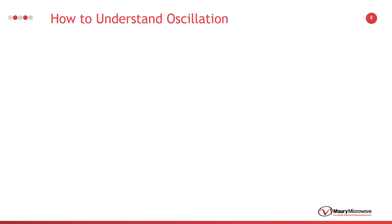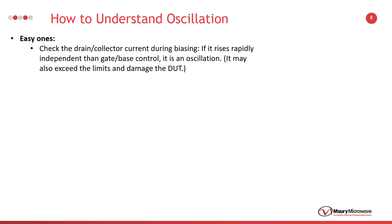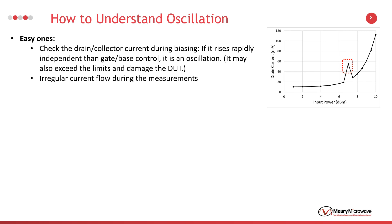How do you understand if your DUT is oscillating during a measurement? There are different ways to understand if your DUT is oscillating. I categorize them into easy ones and difficult ones to observe. The easiest one is to keep looking at the biasing process of the DUT. If the drain or collector current rises rapidly without your gate or base control, it means that the DUT starts oscillating during biasing. Usually it's not possible to sense it in time and too much current starts flowing. It might also be dangerous for your DUT and your measurement setup — it can damage the measurement equipment. Therefore, it's essential to use overcurrent protection of the power supplies properly. The second one is an irregular current trend during a frequency or power sweep in a measurement. For example, here we see a peak around 7 dBm input power. It's a sign of an oscillation and needs to be verified.